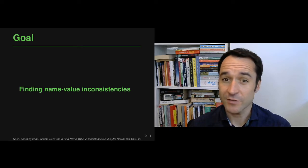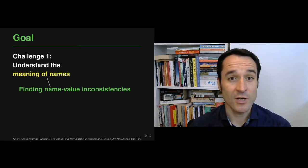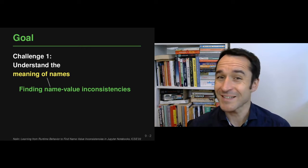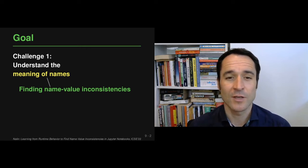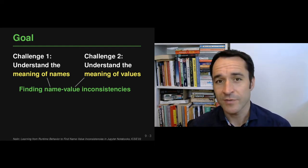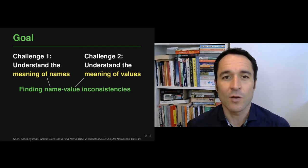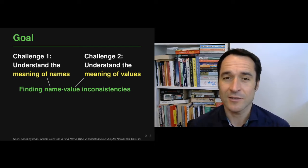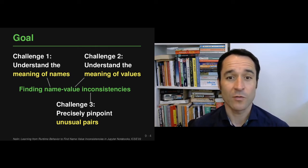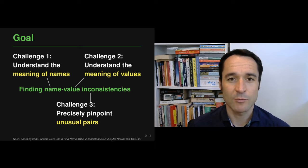The goal of the neural software analysis I'll give as an example is to find such name-value inconsistencies. To do this, there are three hard challenges. Challenge one: understanding the meaning of names — as a human you have an intuition about what a variable name means, but a program analysis does not. Challenge two: understanding the meaning of values — a skilled developer looks at a value and has some idea of what it means, but a traditional analysis doesn't. Challenge three: precisely pinpointing unusual combinations of names and values to report to a developer.